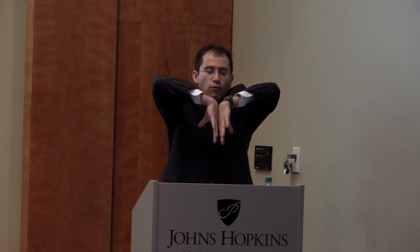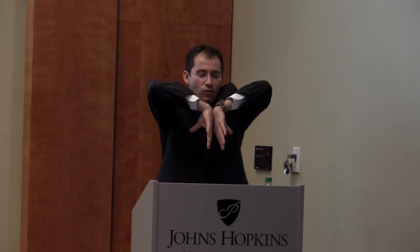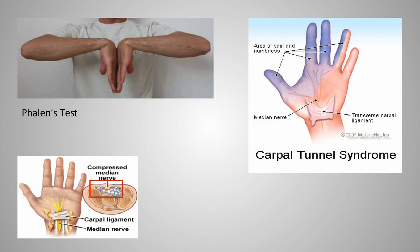Carpal tunnel syndrome involves the median nerve, which runs from the forearm into the palm and becomes compressed at the wrist. When the nerve is irritated, tendons swell and narrow the tunnel, causing pain, weakness, and numbness of the hand that can radiate up the arm and may be especially bothersome at night and in the mornings. You can perform the Phalen's test: hold your wrists as close together as possible for 45 seconds; if you get pain, numbness, tingling, or pins-and-needles radiating down your arm, that raises concern for carpal tunnel syndrome.